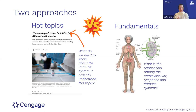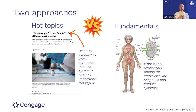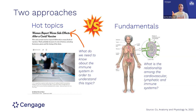Two topics: first is a fundamentals approach — nuts and bolts, here is the immune system. I usually tie it in where we're talking about the cardiovascular system, lymphatics, and then I add in a bit of the immune system. The hot topics approach is one I've used before — I'll let students pick something they're interested in, then think about what I need to teach them in order to discuss that topic.